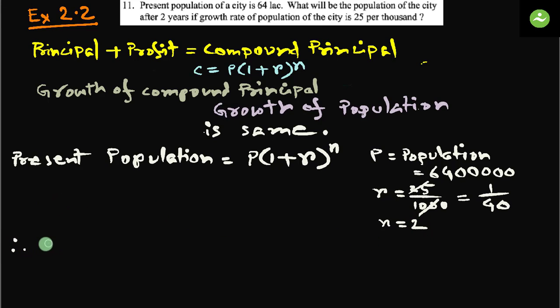Therefore, present population equals to 64 lakhs into (1 plus 1 by 40) to the power 2.